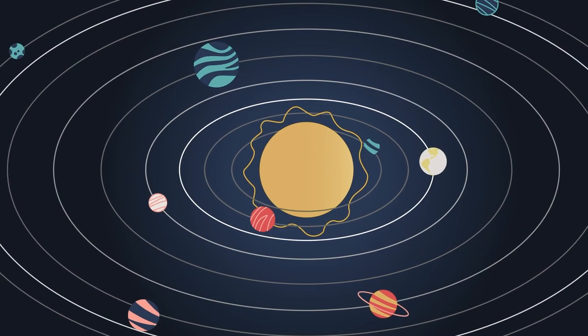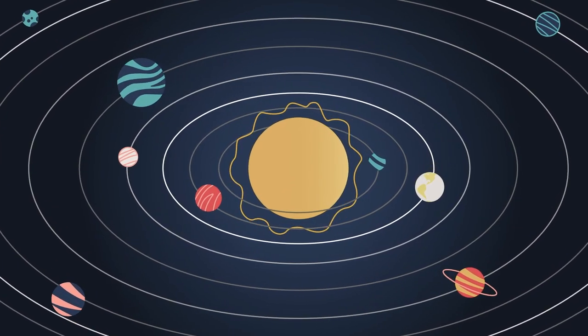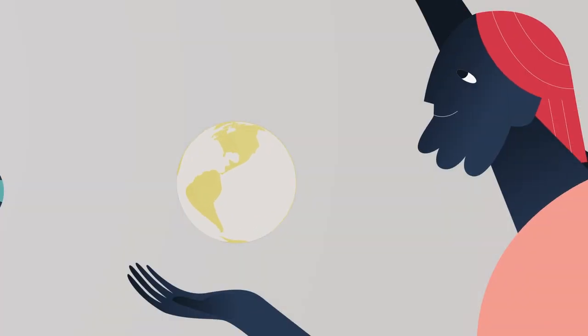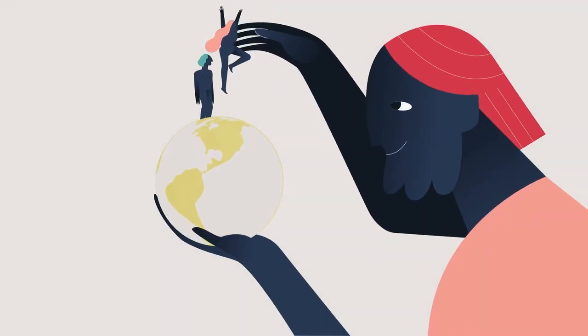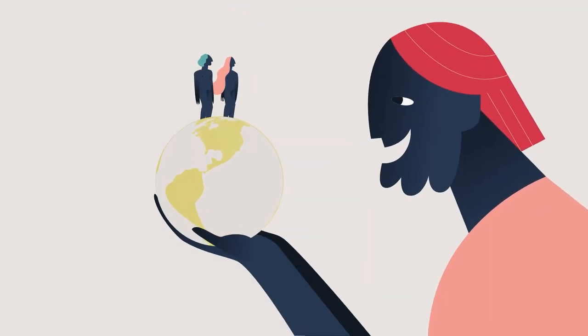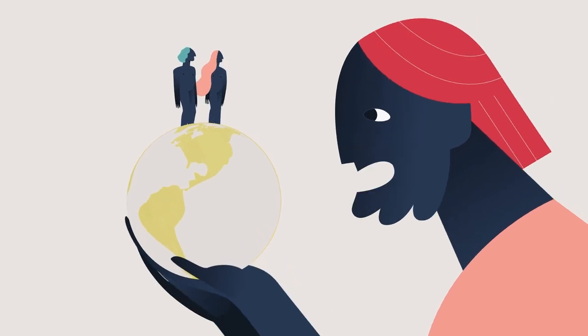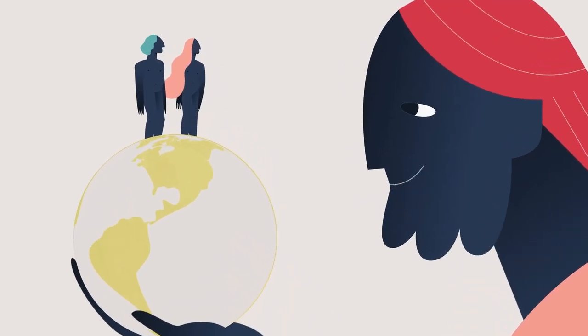How do we begin to understand the God of the universe? In the beginning, when God made the first people and placed them in a beautiful garden, he walked with them and taught them personally.